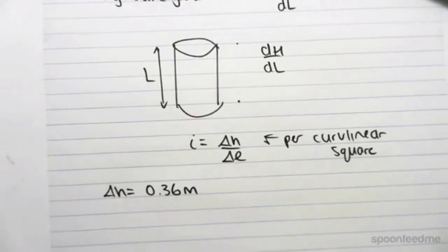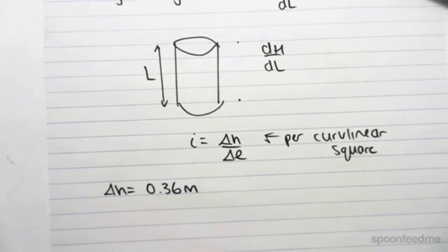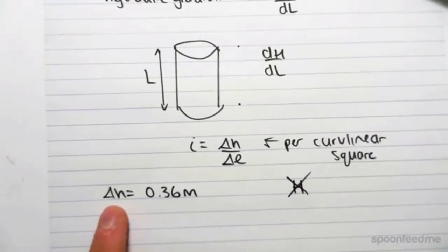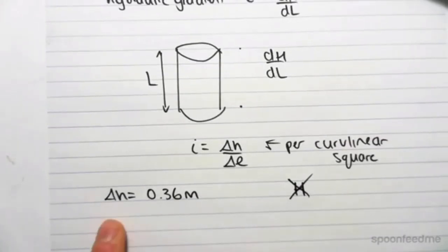Once again, it's the hydraulic gradient change or drop from EP to EP. So it's not the total head, which we represent by capital H. It's the small h, which is the change in head from EP to EP, between equal potential lines.